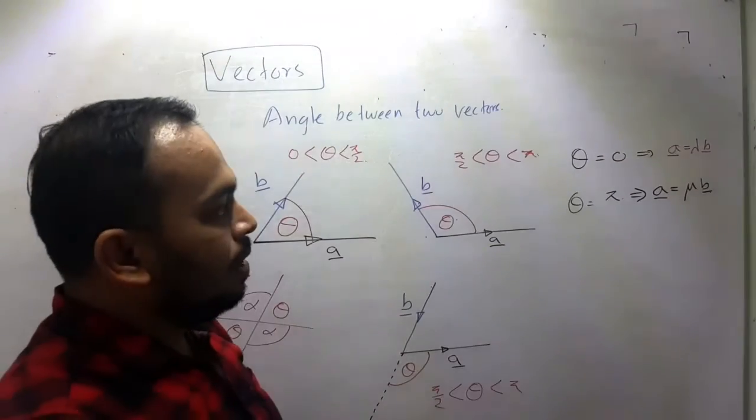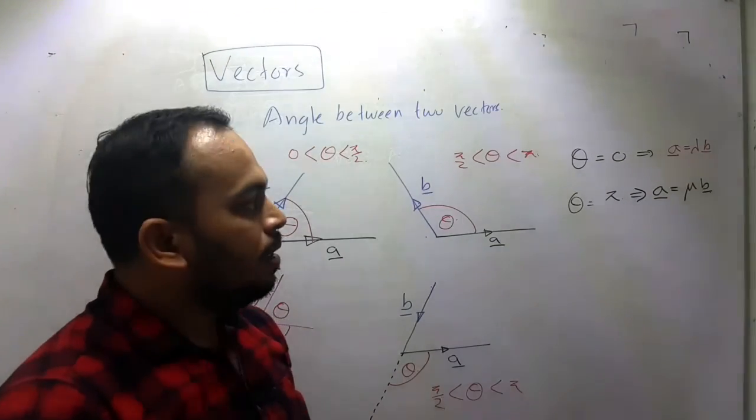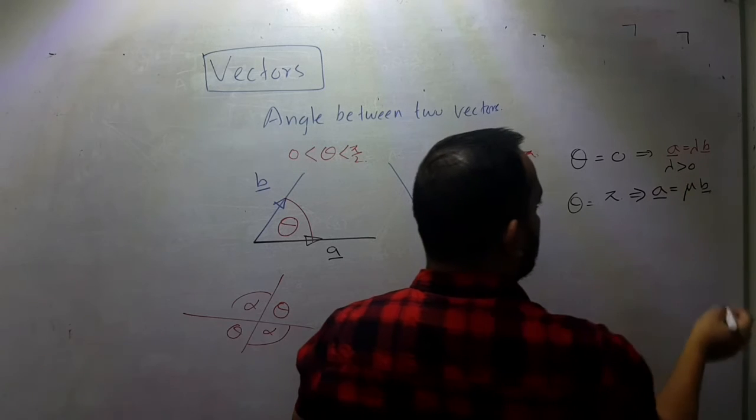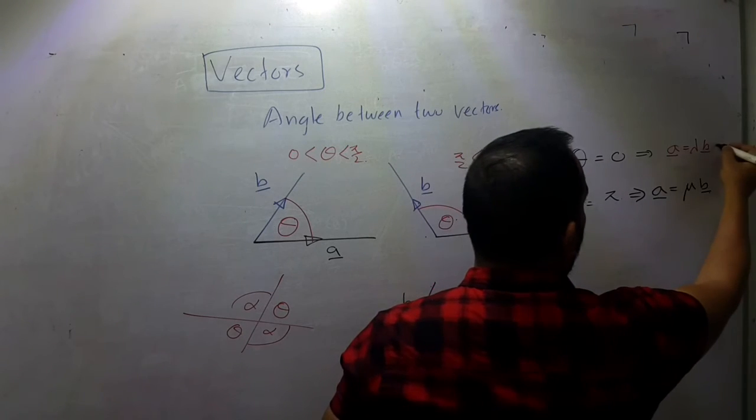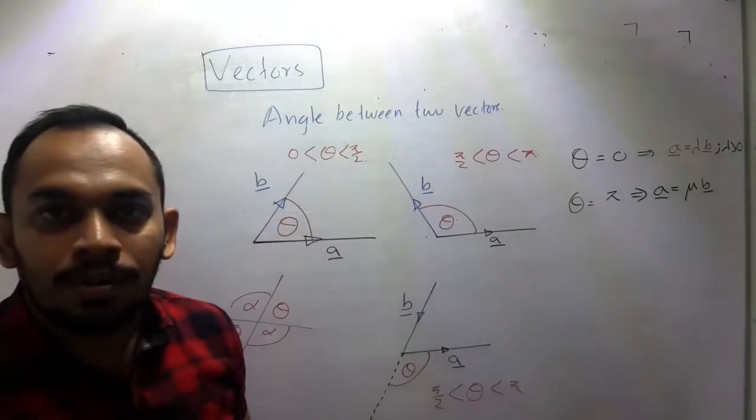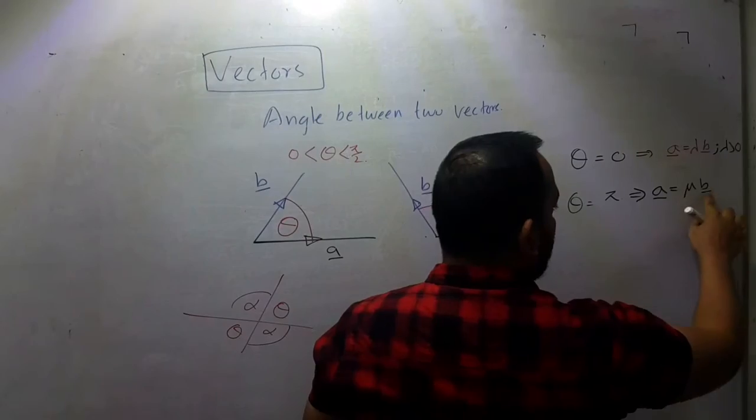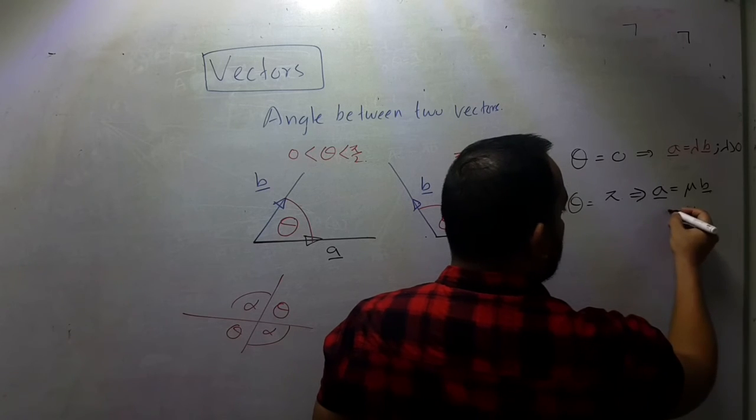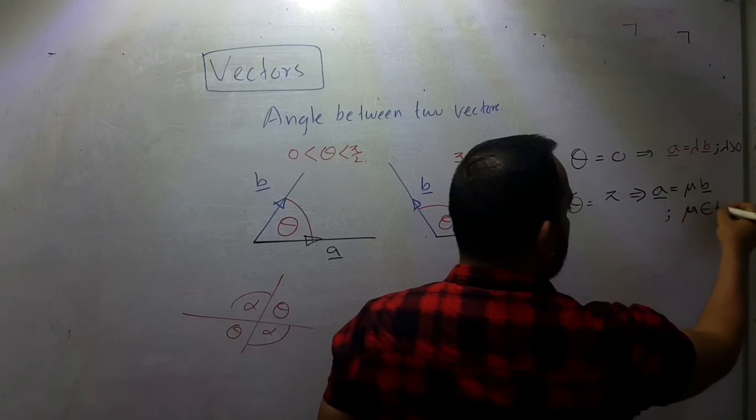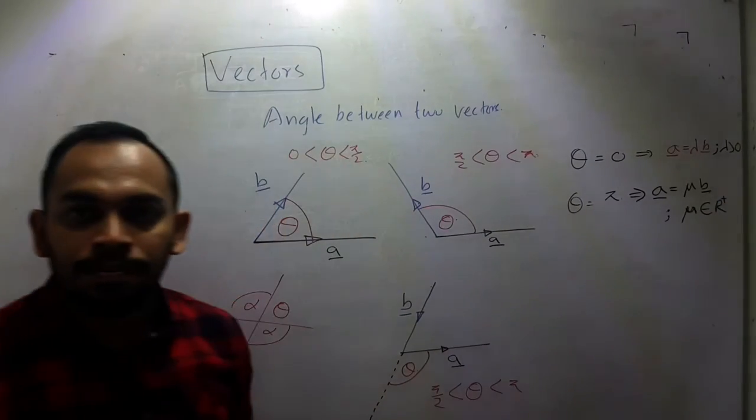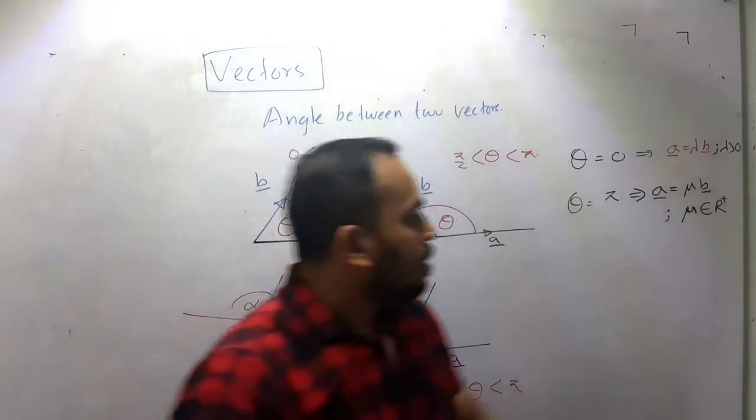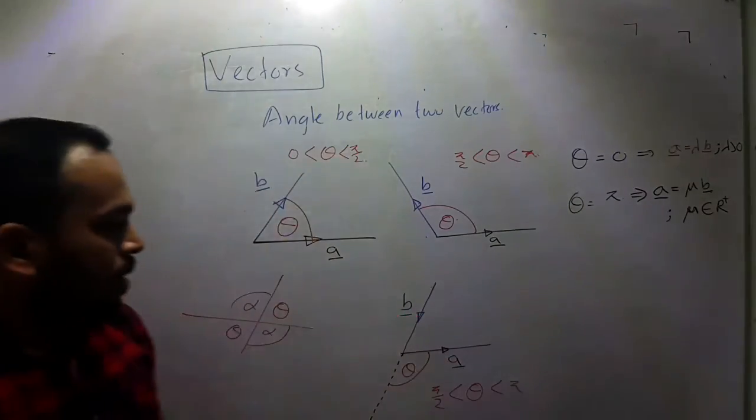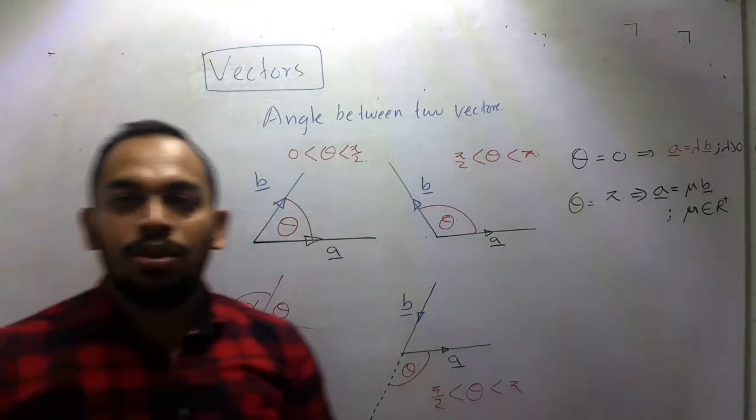This is also a is equal to mu times b. If they are in the same direction, lambda must be positive. Lambda is positive. If they are in opposite directions, mu is a scalar. Mu is less than 0. So this is how you define the angle between two different vectors. Thank you.